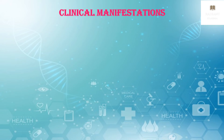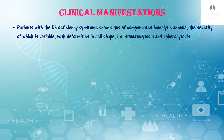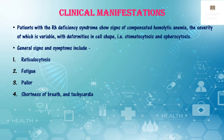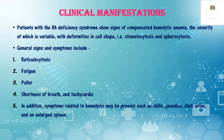Now let us see the clinical manifestations of RH deficiency syndrome. Patients show signs of compensated hemolytic anemia, the severity of which is variable, with deformities in cell shape — stomatocytosis and spherocytosis. General signs and symptoms include reticulocytosis, which is an increase in reticulocytes (immature red blood cells), as the bone marrow rapidly produces immature RBCs to compensate for destroyed RBCs. Additional symptoms include fatigue, weakness, shortness of breath, and tachycardia.